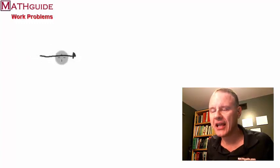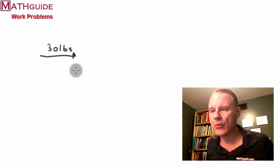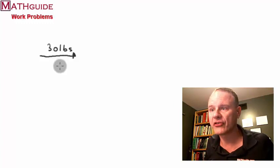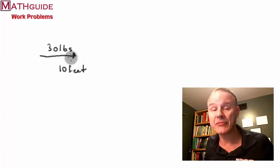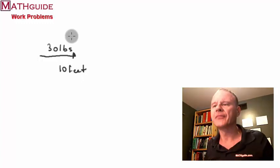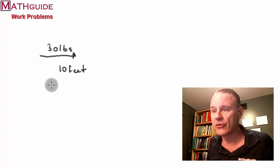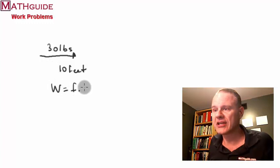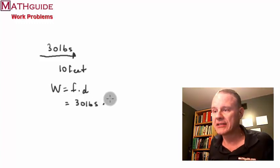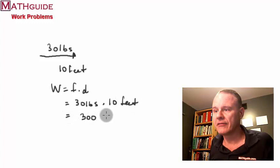For our first easy problem, let's say we have a horizontal force of 30 pounds, and we're going to carry out that 30-pound force for 10 feet in the same direction — like you're pushing something with 30 pounds of force for 10 feet. Work equals force times distance: 30 pounds times 10 feet equals 300 foot-pounds.